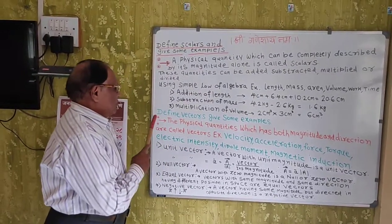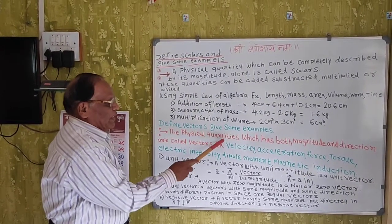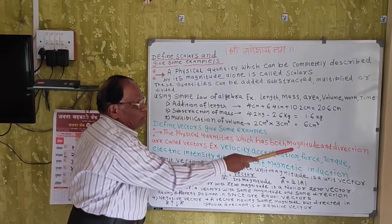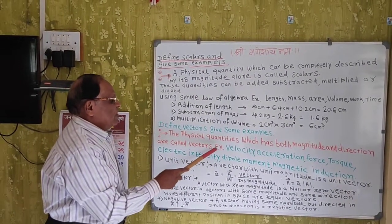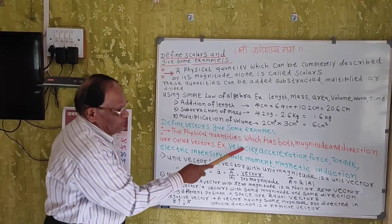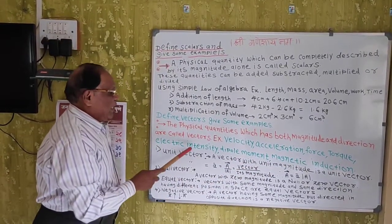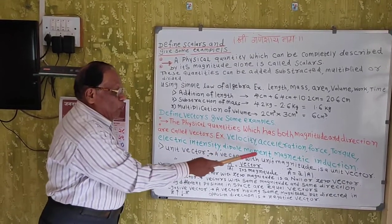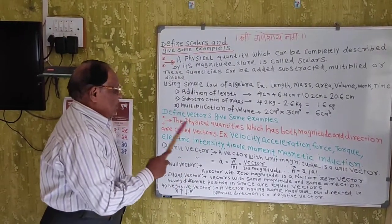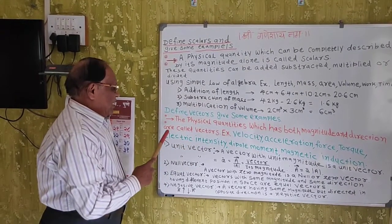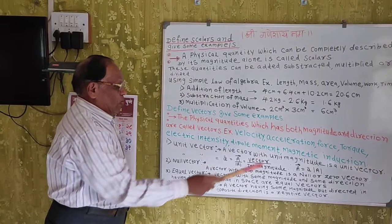The second definition is that of Vectors. Physical quantities which have both magnitude and direction are called Vectors. For example: Velocity, Acceleration, Force, Torque, Electric Intensity, Dipole Moment, and Magnetic Induction. This covers the definition and examples of vectors.